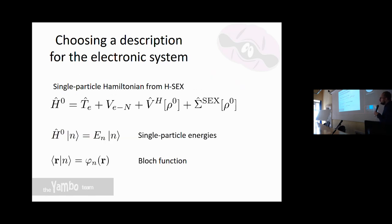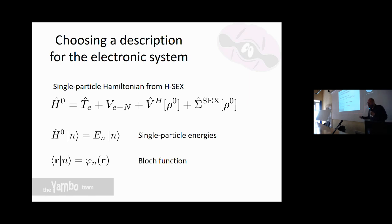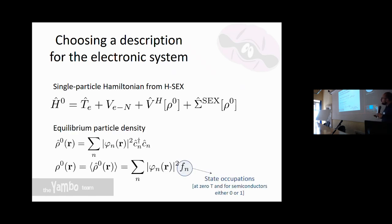If we consider just the ground-state Hamiltonian, we can obtain the single-particle energies and Bloch functions — these could be results of a DFT calculation or quasiparticle energies. We're then interested in the density: the ground-state density can be expressed in terms of the single-particle basis, and its expectation value gives the state occupations.